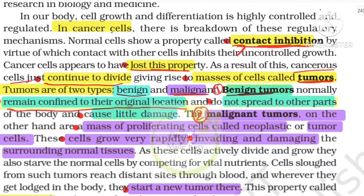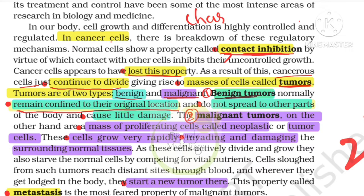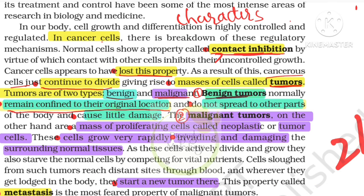First question: what are the characters of cancer cells? Cancer cells show a property called contact inhibition.